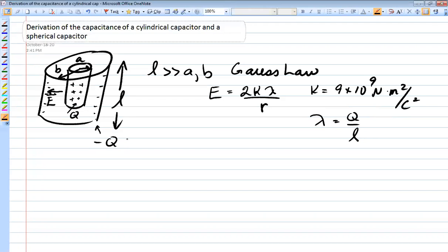Remember, capacitance is defined to be the charge divided by the potential difference. Capacitance is charge over potential difference between the inner and outer cylinders. So what we need to do now is do an integration to get the potential difference between the inner and outer cylinders.